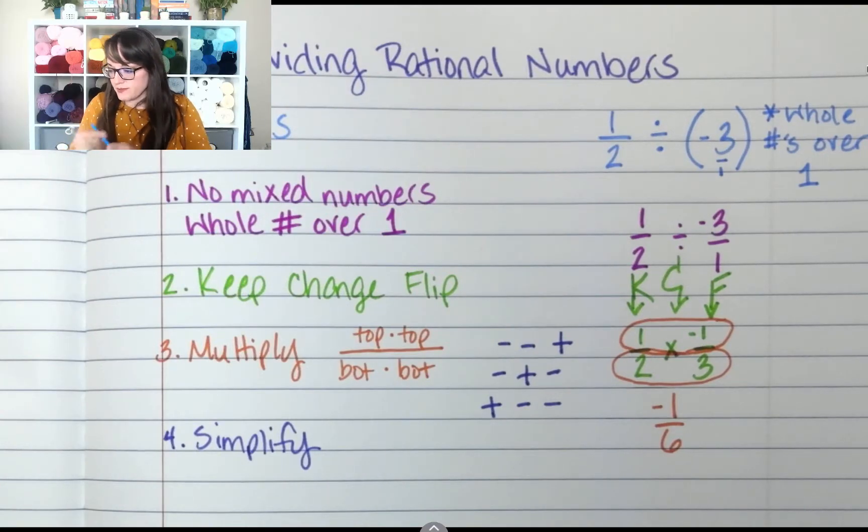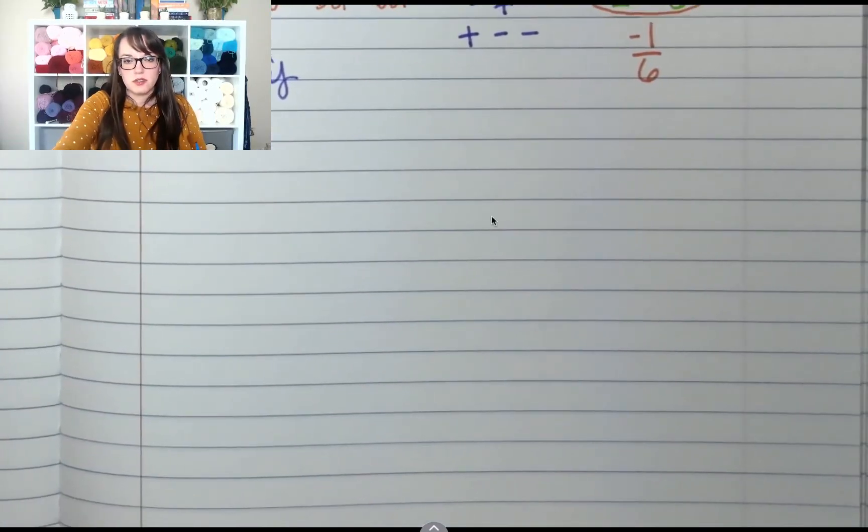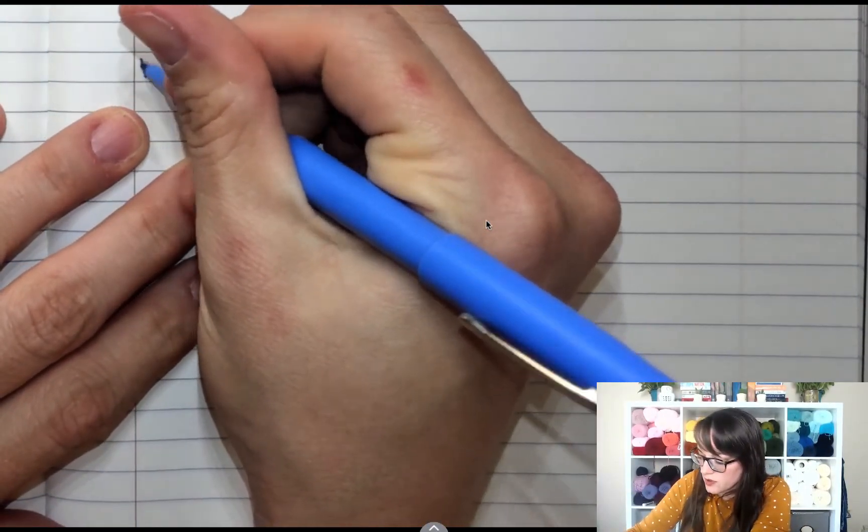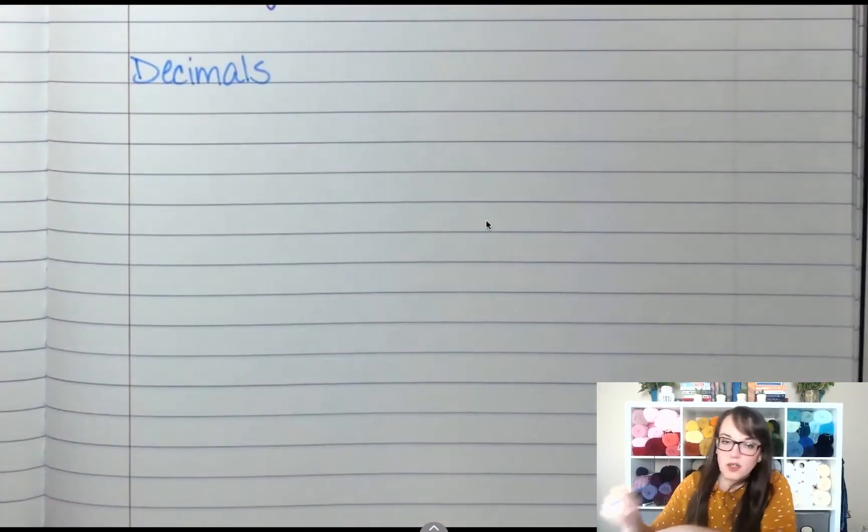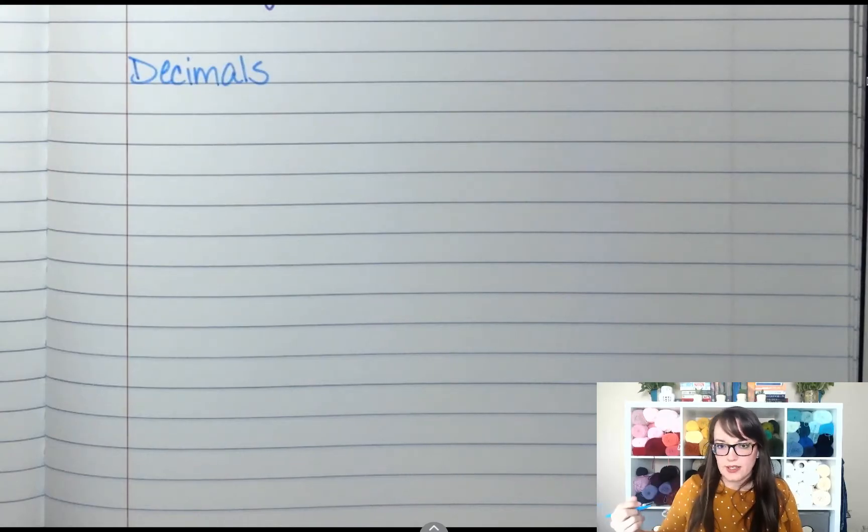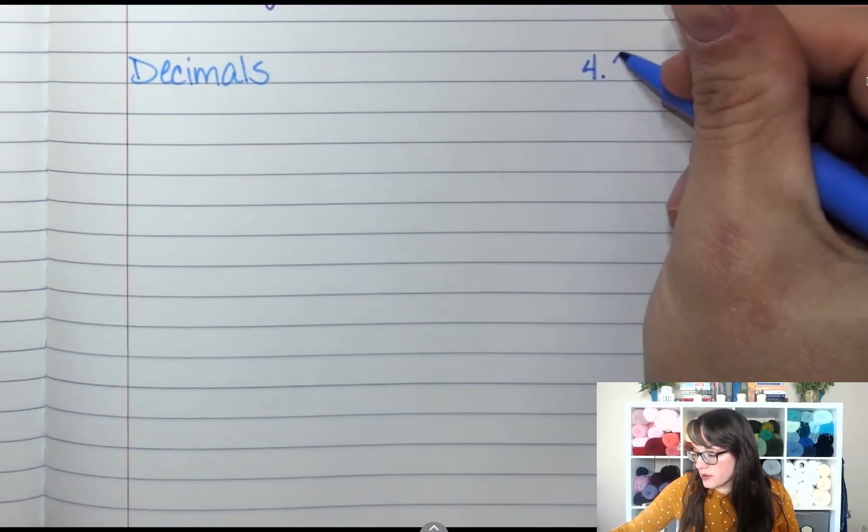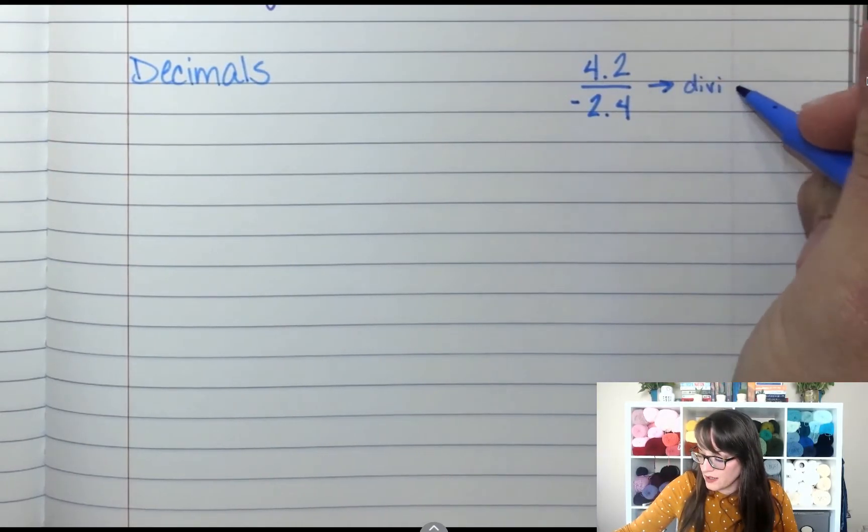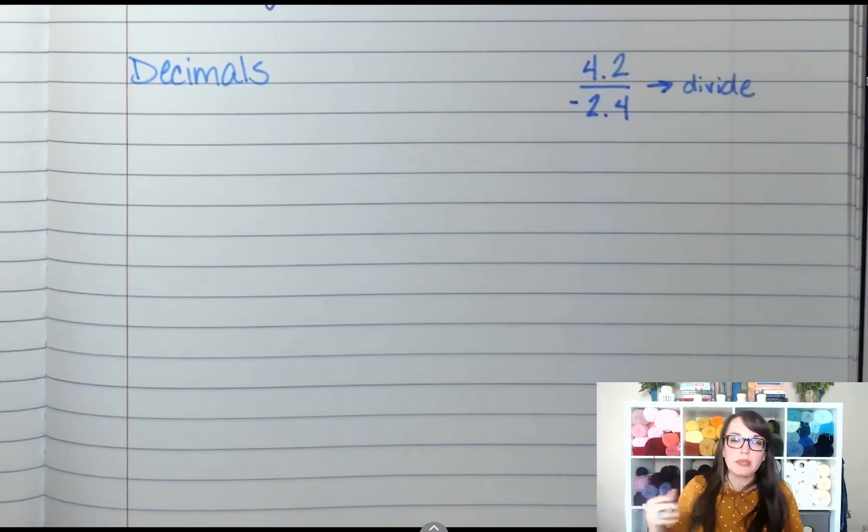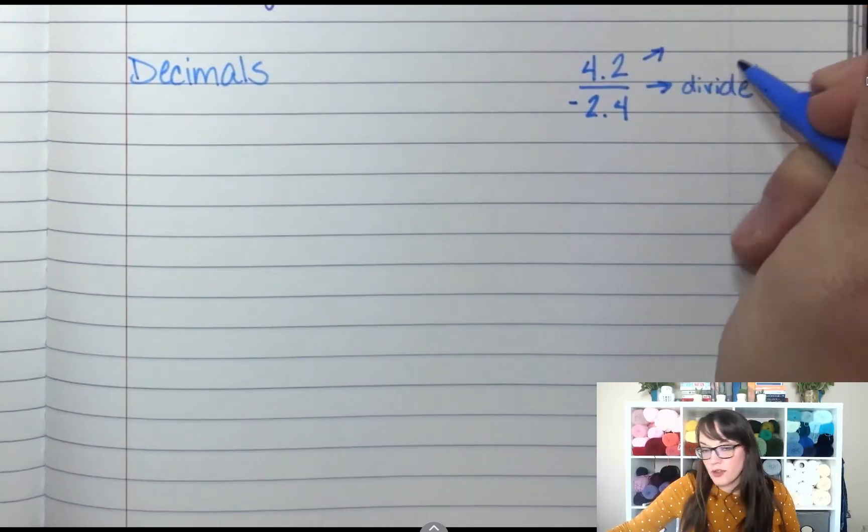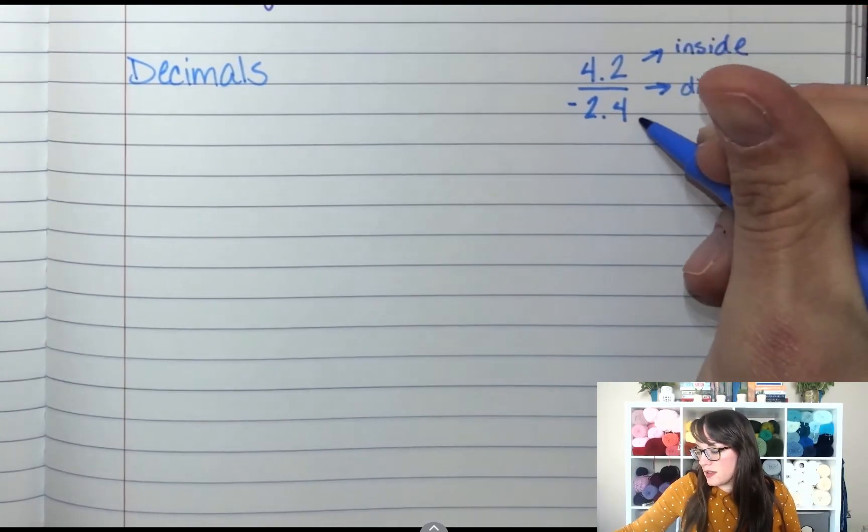Now let's look at decimals. All right, now decimals—dividing with decimals. There are different ways to show division. One of those ways is as a fraction. Fractions are just another way to show division. So if you have 4.2 over negative 2.4, this just means to divide those numbers. Now this isn't very proper because it looks like a fraction and it has decimals in it—we don't like to mix the two—but if you ever see it like this, the numerator goes inside the house and the denominator goes outside.